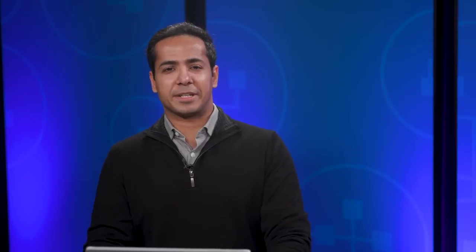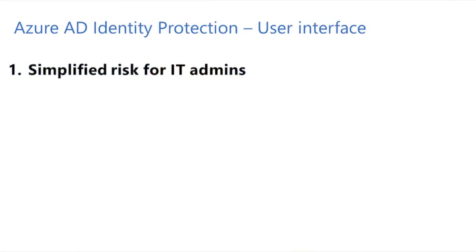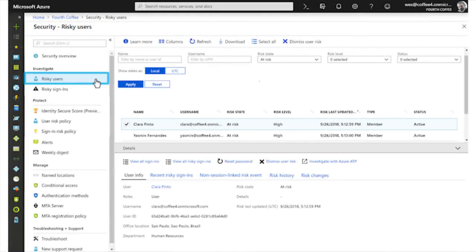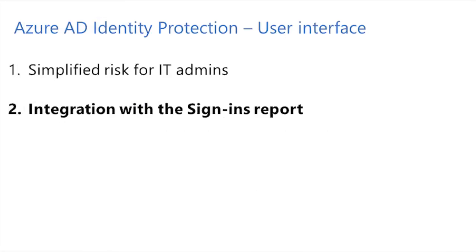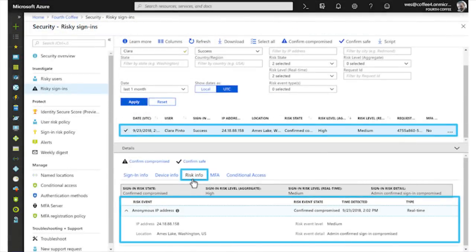Let's start with the UI. The UI is now much more intuitive and integrated. Number one, we have simplified risk for our overburdened IT admins — they now have only two major types of risk in their direct line of sight: user risk and sign-in risk. Number two, we've integrated with the sign-ins report, so IT admins do not need to correlate detections with sign-ins anymore. Rather than showing IT admins isolated detections, we now show them risky sign-ins. IT admins can click on a sign-in and learn more, including how and why a sign-in was risky.